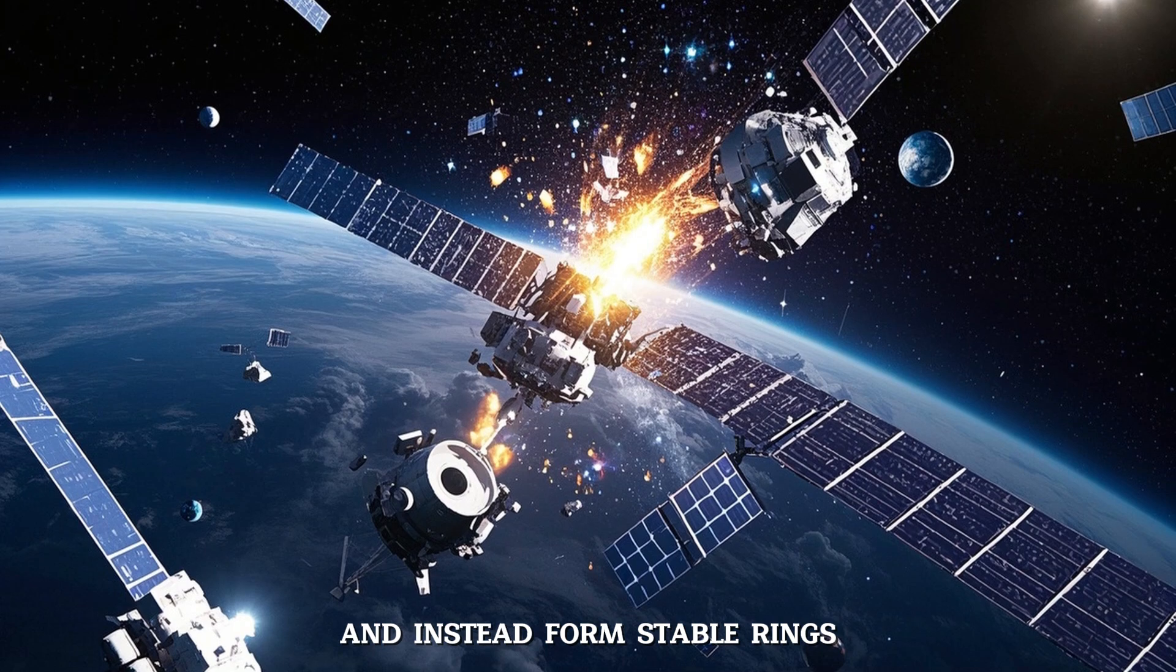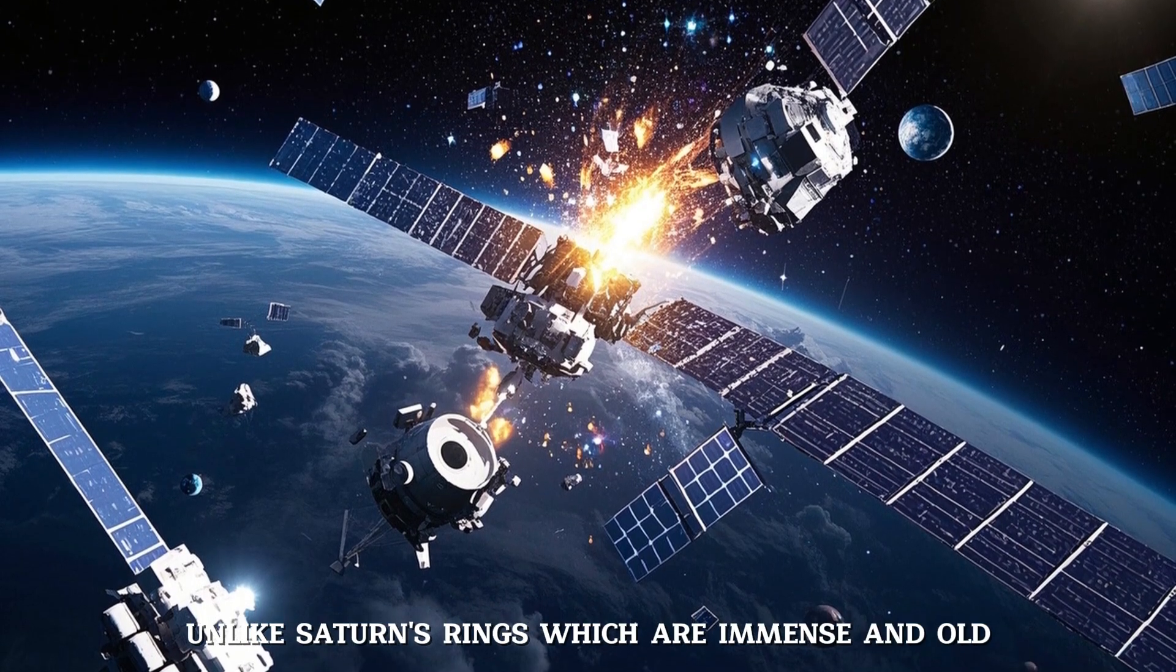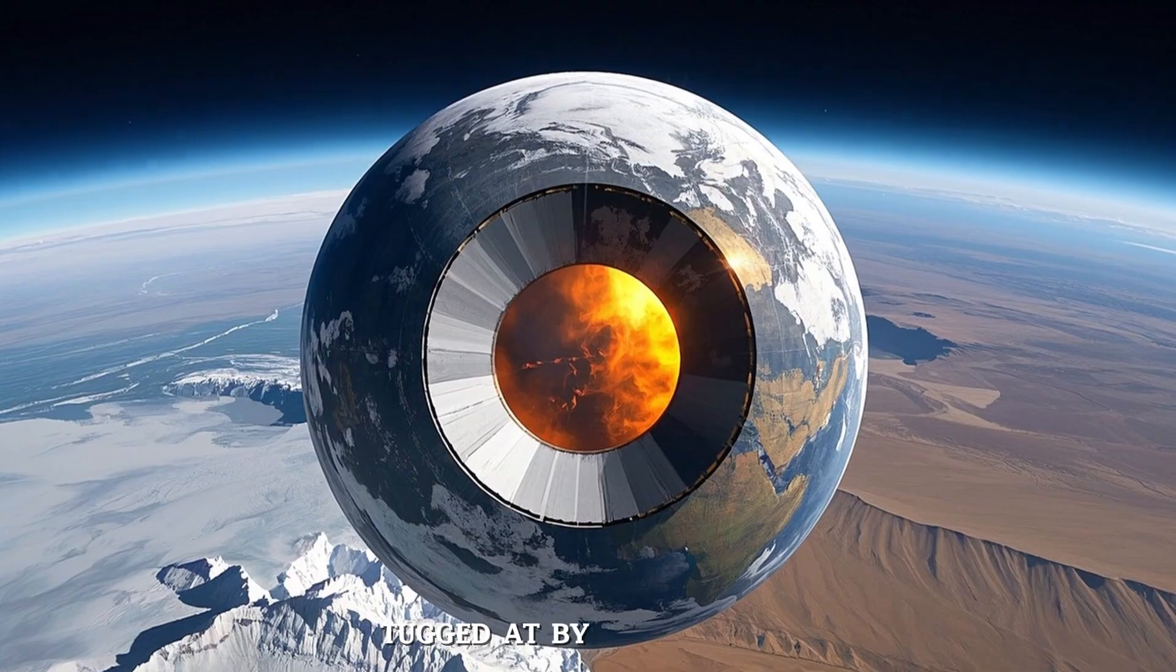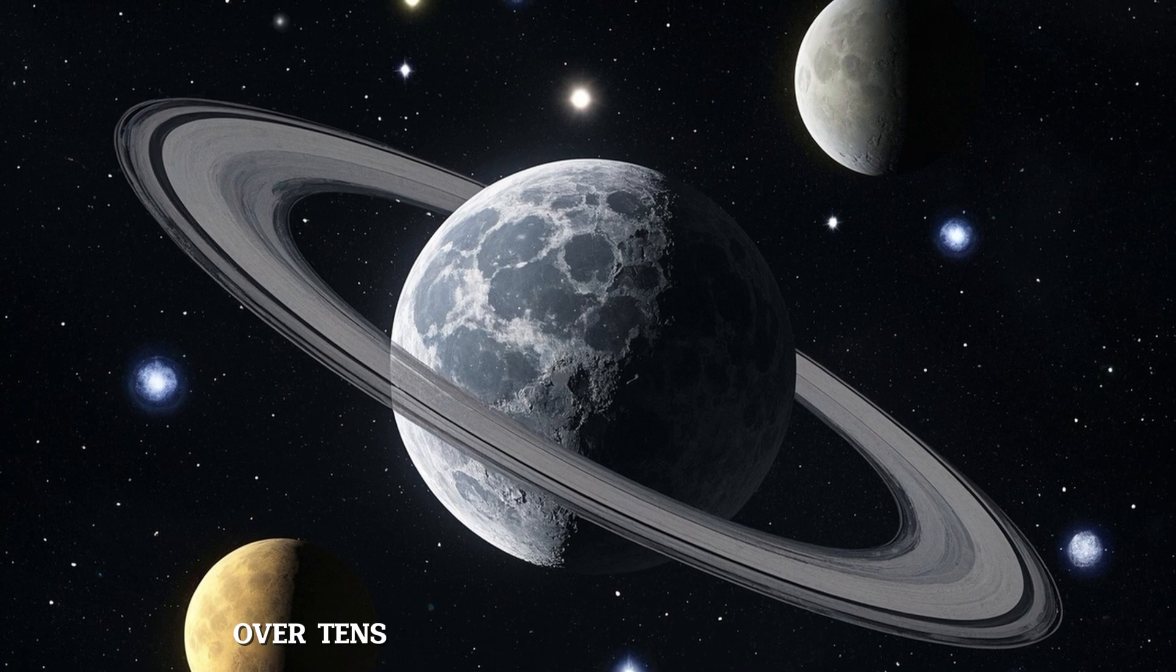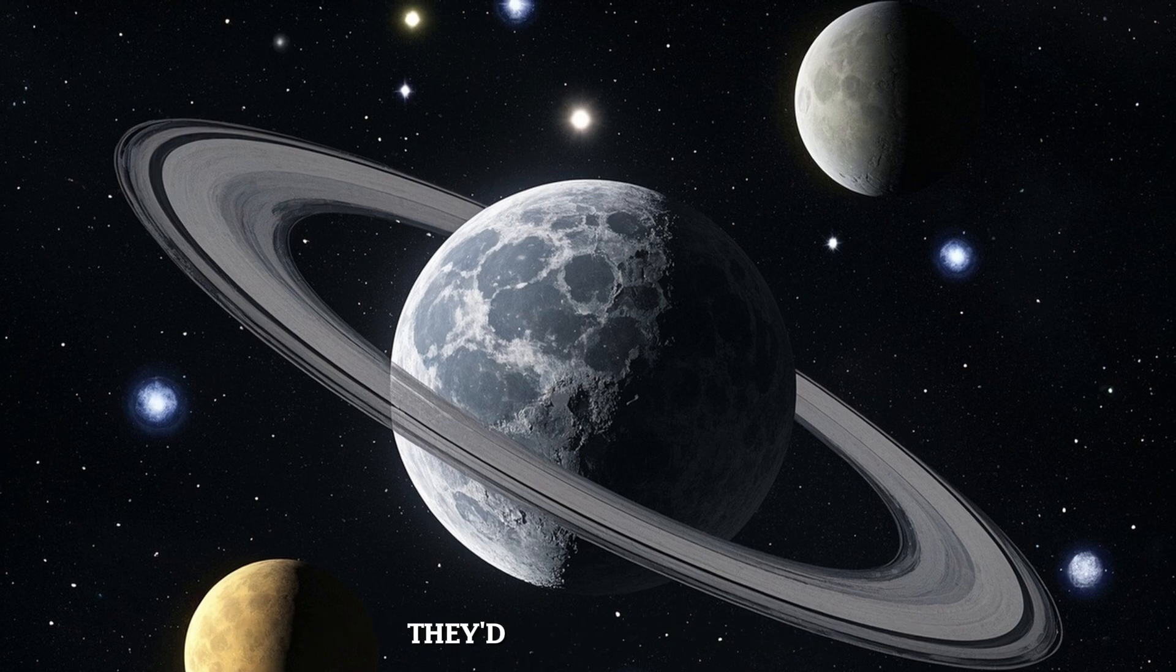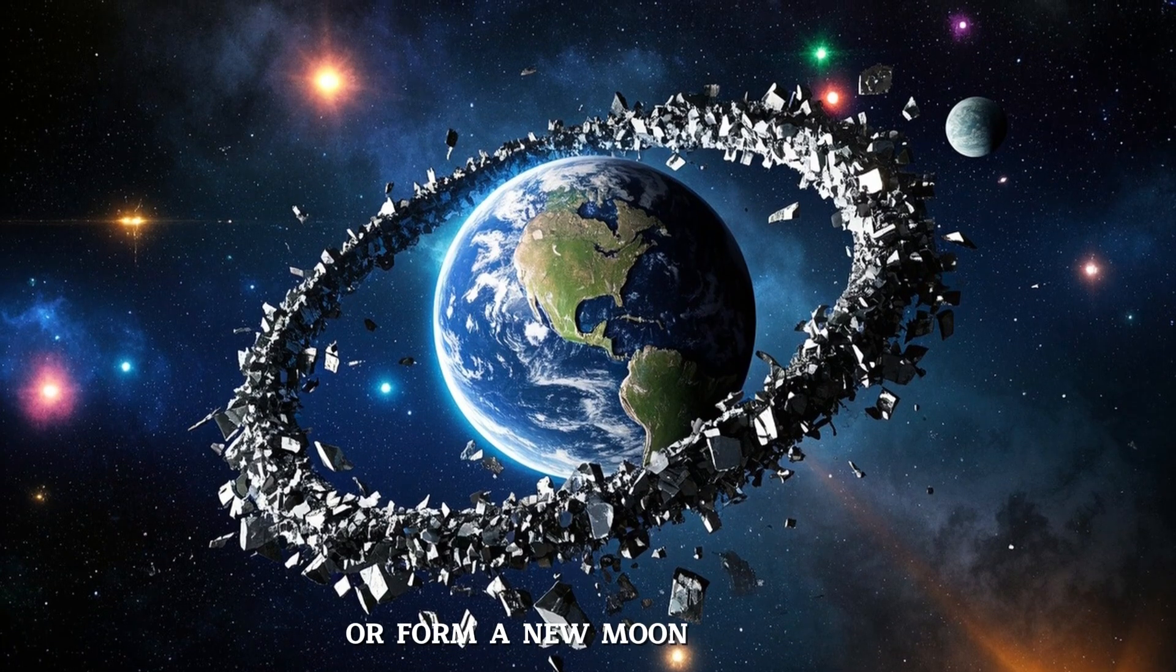But they wouldn't last forever. Unlike Saturn's rings, which are immense and old, Earth's rings would be constantly tugged at by our gravity, the moon's pull, and even solar radiation. Over tens or hundreds of millions of years, they'd either dissipate, fall to Earth as a rain of dust and rock, or form a new moon entirely.